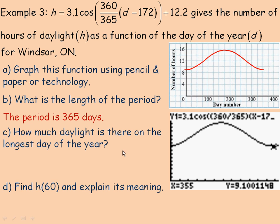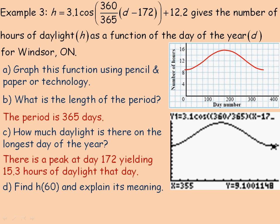Now we're asked how much daylight is there on the longest day of the year. So the longest day of the year would be of course right here, it's something a little less than 16. It's actually on day 172, that's the 21st of June. And so if I were to plug in 172 in place of d here, 172 minus 172 is 0, times this fraction is still 0. And the cos of 0 is 1, so we actually have 3.1 times 1, which is 3.1, plus the 12.2, which gives us 15.3 hours of daylight on that day. So that's the most hours of daylight in Windsor, Ontario during the year.